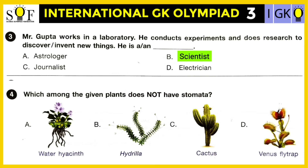Question number four: Which among the given plants does not have stomata — water hyacinth, hydrilla, cactus, or Venus flytrap? The correct answer is hydrilla. Hydrilla is an aquatic plant that absorbs gases through its surface and does not have stomata.